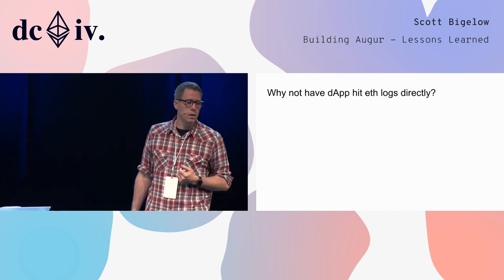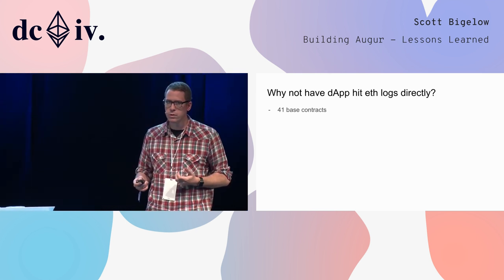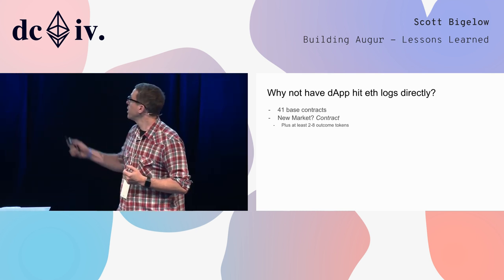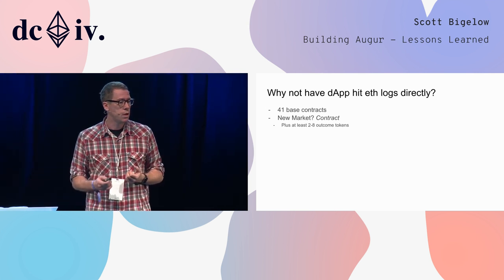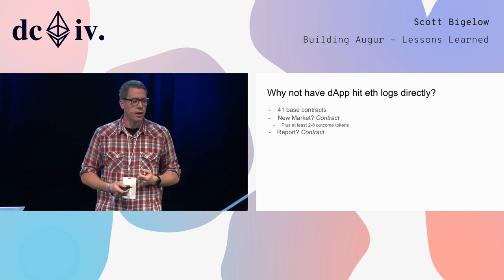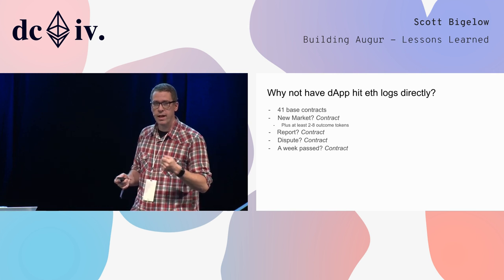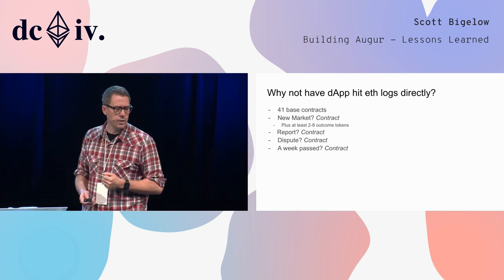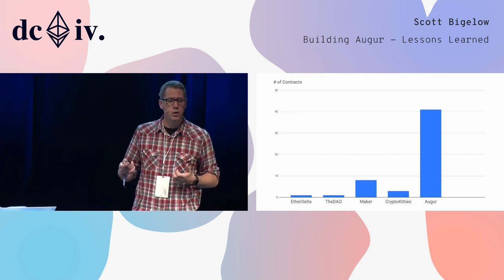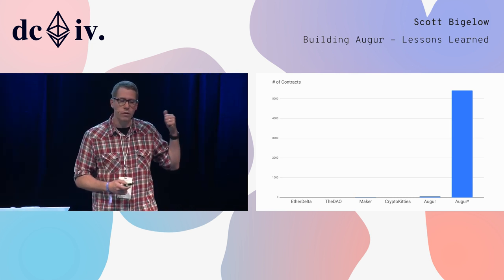There's another reason too. I mentioned there are 41 base contracts, but that's just where it starts. When you create a new market, that is a new contract, plus two to eight outcome token contracts. If you provide an initial report, that is a contract. When you provide a dispute, that is a new contract. Has a week passed — that is a contract called a fee window. So the 41 contracts are dwarfed by the number deployed since launch, which sits at over 5,000.